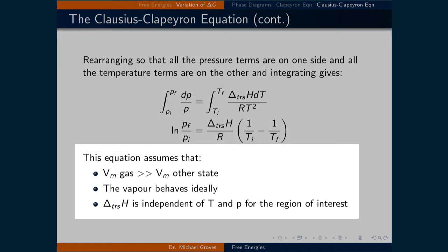This equation assumes that the molar volume of the gas is much larger than the molar volume of the other phase, that the vapor behaves ideally, and that the change in enthalpy of the transition is independent of the temperature and pressure for the region of interest.